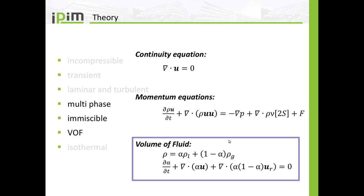For multiphase modeling, we are using the volume of fluid method. There we assume a mean density that we will use in the equations, and we calculate this mean density from the density of the liquid and the density of the gas. For that, we are using a scalar field alpha. Alpha tells us if we have liquid or gas in a given cell — if alpha is one, then we know that cell contains only liquid, and if alpha is zero, then we know that cell contains only gas.